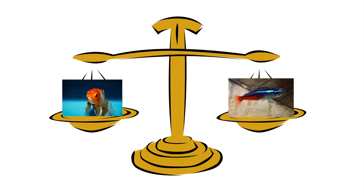An opportunity cost is what you give up when you make a choice. For example, the opportunity cost of keeping some neon tetras in your fish tank is keeping a goldfish. What this means is that if you keep neon tetras, you can't also keep a goldfish in the same tank. On the other hand, the opportunity cost of keeping a goldfish in your fish tank is keeping neon tetras, so if you have a goldfish, you can't have neon tetras.